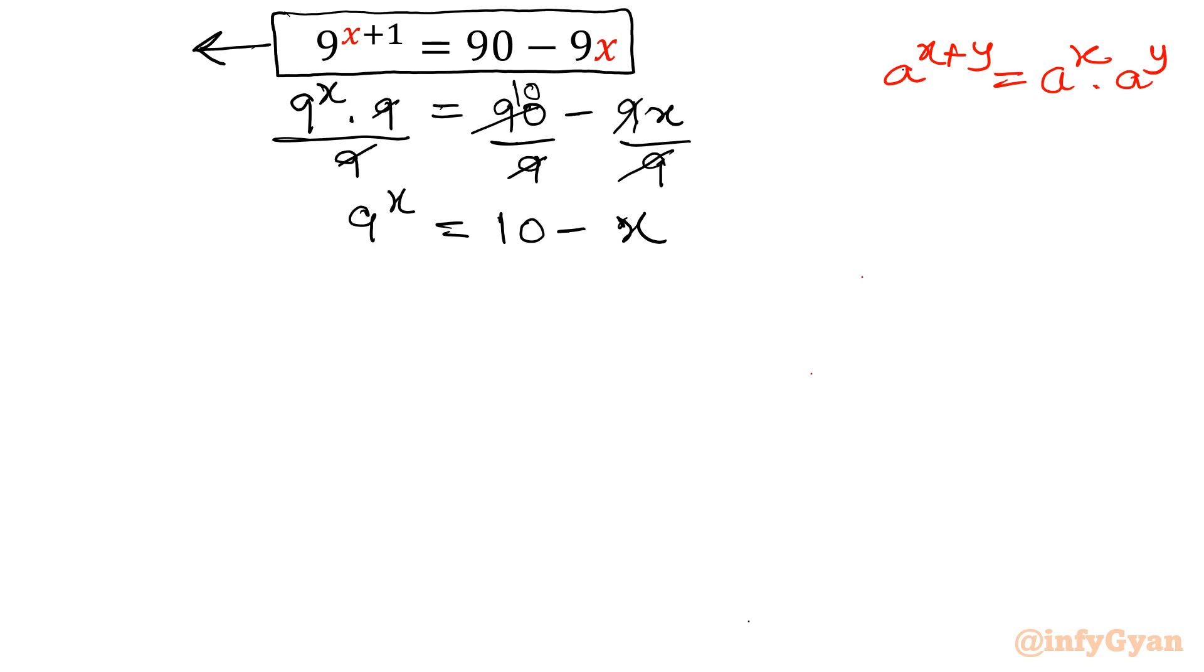Right hand side is 90 minus 9. In this equation I am talking. 90 minus 9 is 81. Left hand side 9 square is 81. So if I will put x equal to 1, then that is one solution by hit and trial method.